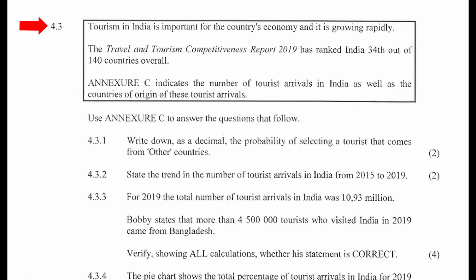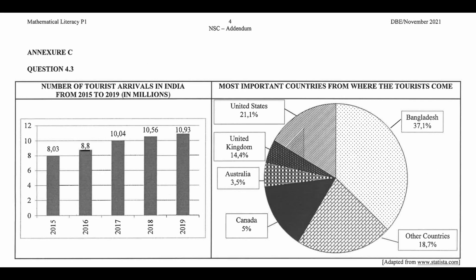Question 4.3: Tourism in India is important for the country's economy and it is growing rapidly. The Travel and Tourism Competitiveness Report 2019 has ranked India 34th out of 140 countries overall. The exercise indicates the number of tourist arrivals in India as well as the countries of origin of these tourist arrivals.